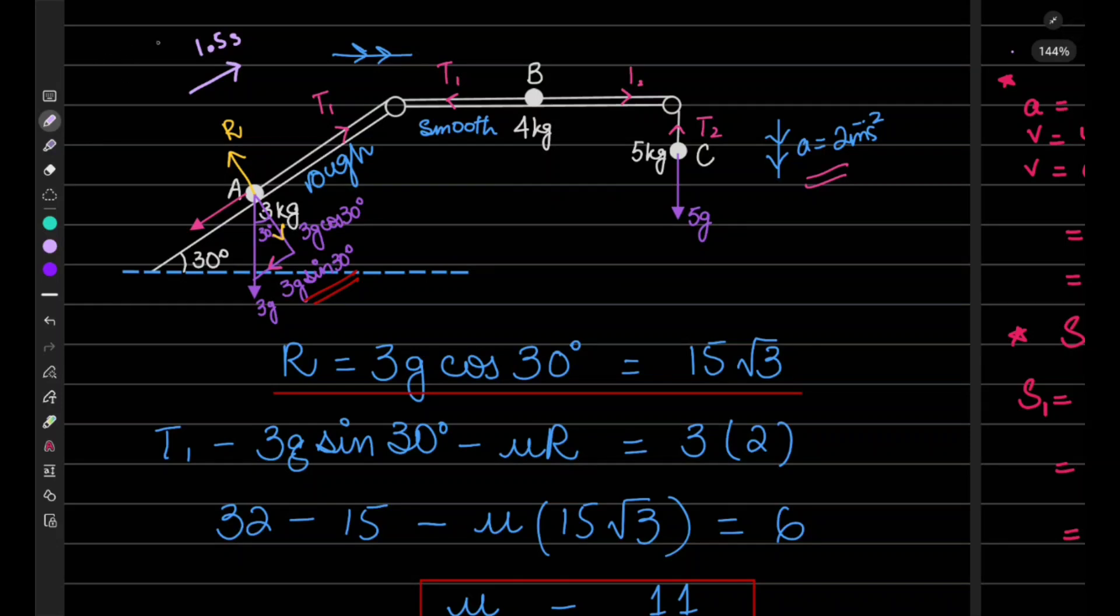So first we will calculate the distance covered in these 1.5 seconds. Then they say the string breaks somewhere. Because body A was moving upwards, traveling up the plane, it will not instantaneously suddenly come to rest, but instead it will continue its motion upwards due to inertia.